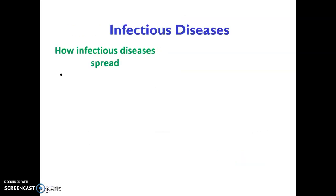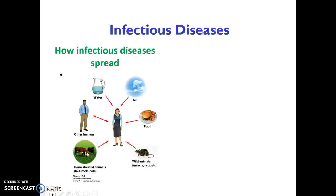Continuing with infectious diseases, let's look at how they spread. A person may obtain an infectious disease by drinking water, by breathing in airborne particles that contain bacteria or virus, by ingesting it in food, from wild animals, from insects such as mosquitoes and ticks, from domesticated animals and pets, and of course from other humans.